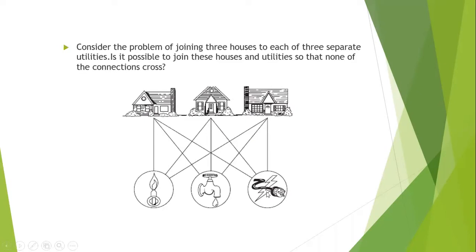This is a special type of graph. If you look at this figure, you can identify that it is a bipartition — meaning if you divide the vertices into groups, the houses come in one group and the utilities come in the other group. There are no edges between the houses, and no edges between the utilities, but there is an edge between each house and each utility. This is known as a complete bipartite graph.